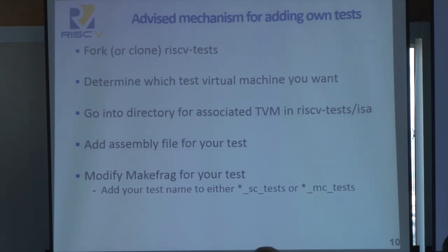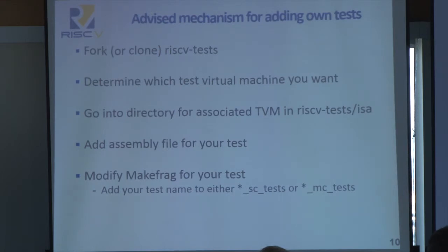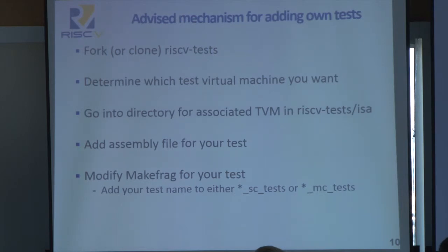Presuming you've listened so far, you would likely wish to add your own assembly tests to the RISC-V tests. First, you must fork or clone RISC-V tests into your own private repository. Next, determine which test virtual machine you want. For example, if you wish to test supervisor instructions, you'll need to use one of the S virtual machines — RV32S or RV64S. Or if you wish to use the vector machine, you'll need to use either one of the supervisor machines or RV64UV. Then go into the directory in the repository associated with that test virtual machine in RISC-V test slash ISA, add the .s assembly file for your test.